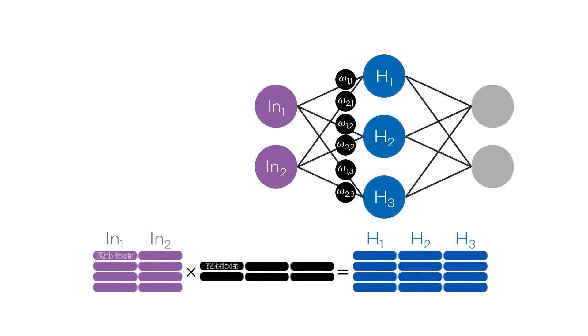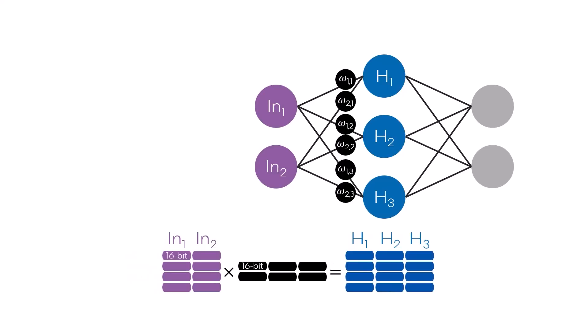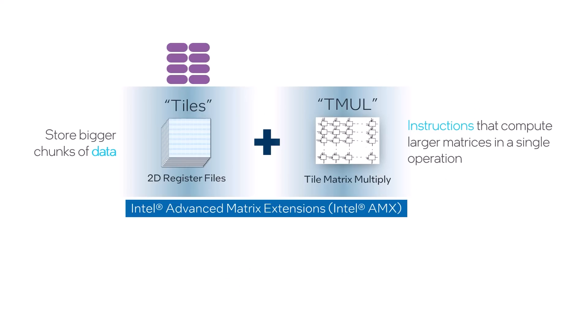Not only does this reduce the model size, allowing for deployment to smaller edge devices, it can also speed up inference by reducing memory bottlenecks.